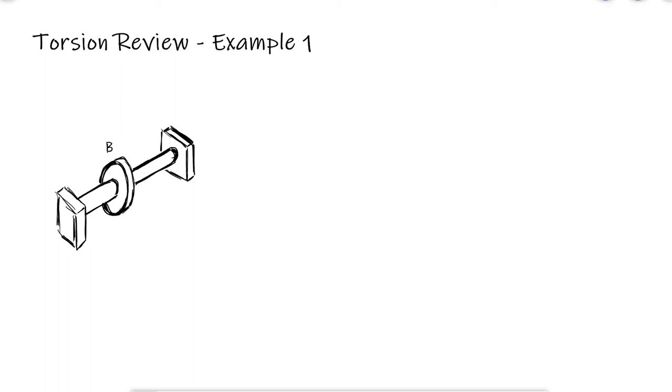Two solid steel shafts are connected to a disc B and to walls A and C. If disc B is subjected to a 1.4 kNm torque, what is the reaction at each support and what is the maximum shearing stress in each shaft?